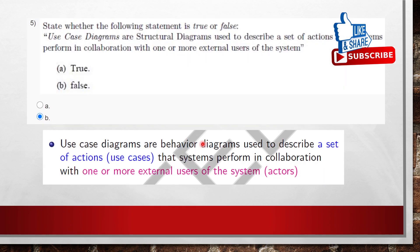Question 5: use case diagrams are structural diagrams used to describe the set of actions that the system performs in collaboration with one or more external users of the system. The answer is false, because use case diagrams are behavioral diagrams, not structural diagrams. The rest of the definition is correct, but since the diagram type is misclassified, the statement is false.